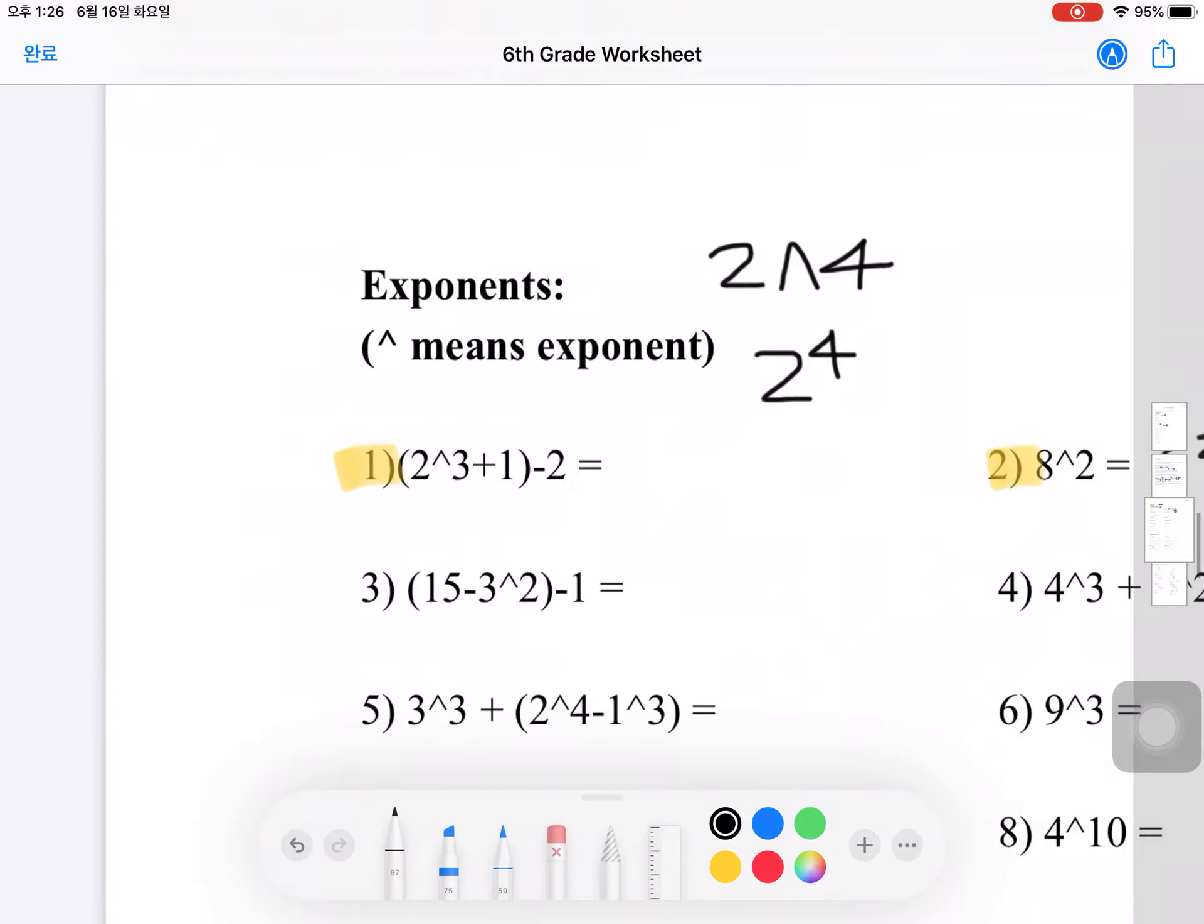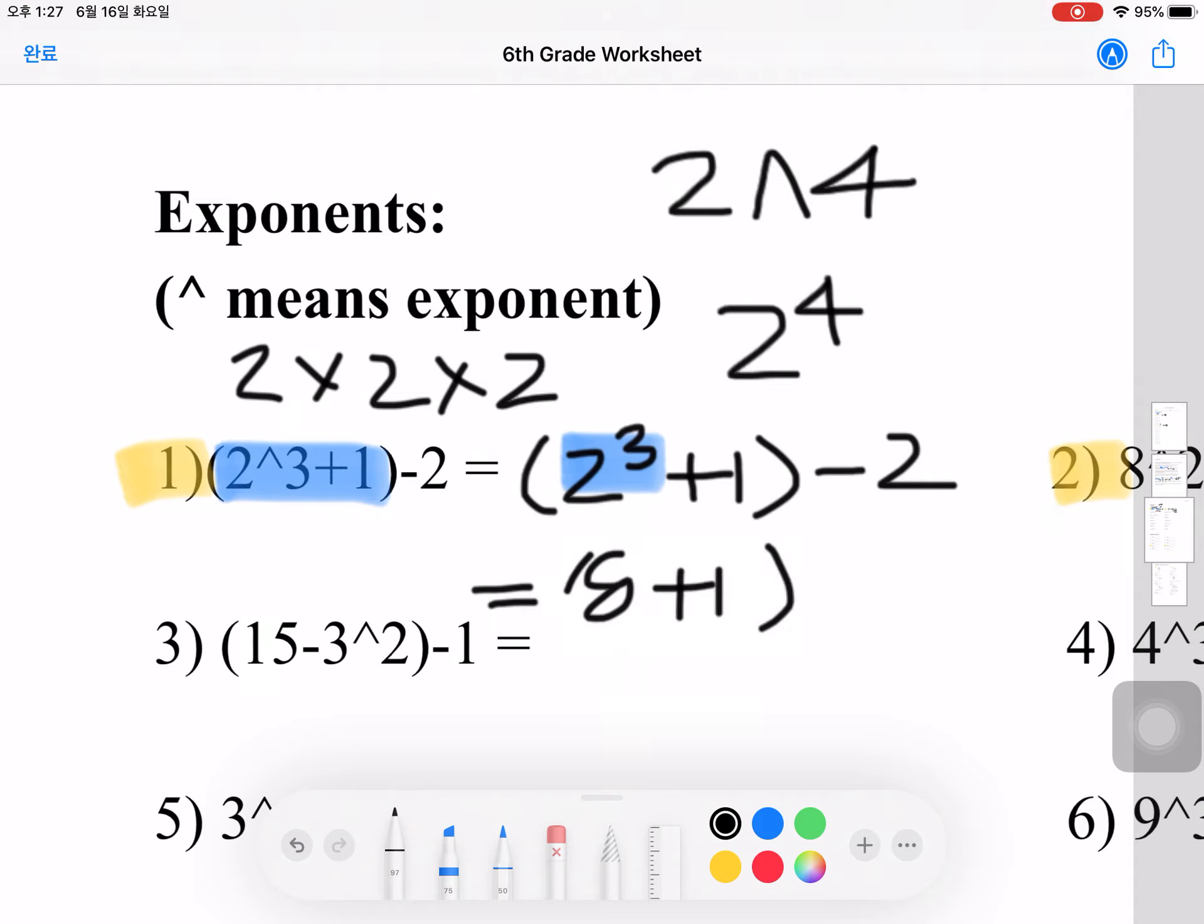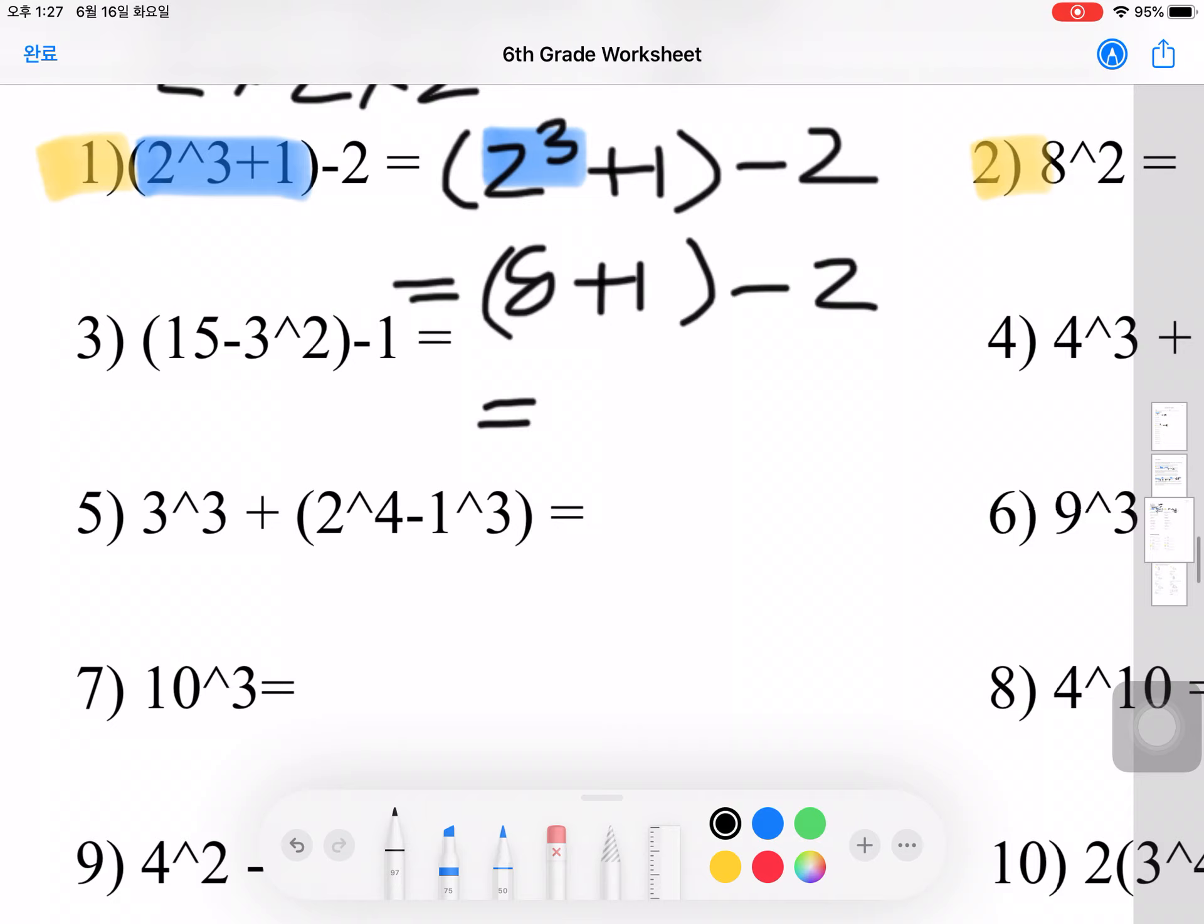Now let's apply that knowledge to number 1, which is a little harder because there are more steps. In this parenthesis, we do it first. So 2 caret 3 plus 1 minus 2. If we rewrite that, it's 2 to the power of 3 plus 1 minus 2. First, we're going to do 2 to the power of 3, which is 2 times 2 times 2. 2 times 2 is 4, times 2 is 8. So it's 8 plus 1 minus 2, which is 9 minus 2, which is 7. So 7 is your final answer.